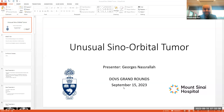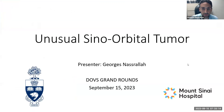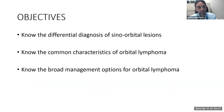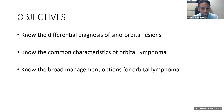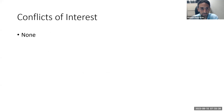Thanks. All right, I'll go ahead and share screen. So I'll be presenting today on an unusual sinoorbital tumor. Thank you very much for having me. The objectives of today are to know the differential diagnosis of sinoorbital lesions, to know the common characteristics of orbital lymphoma — the most common presenting characteristics — and to know the broad management options of orbital lymphoma. No conflicts of interest.